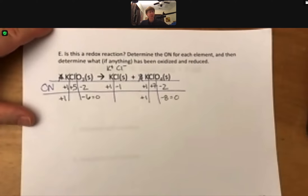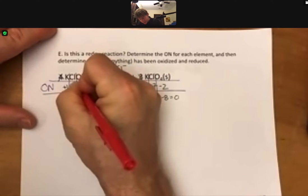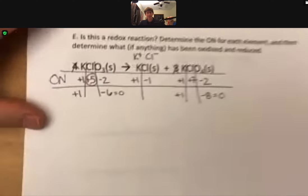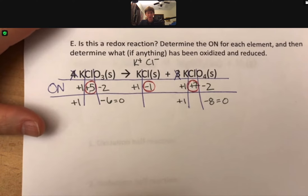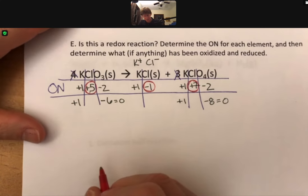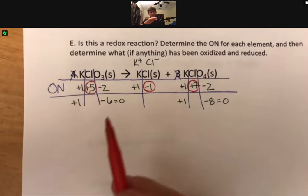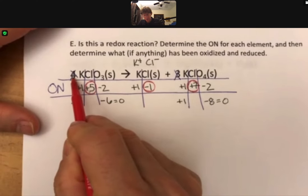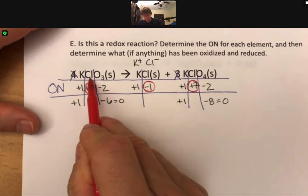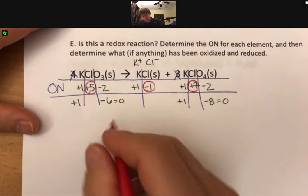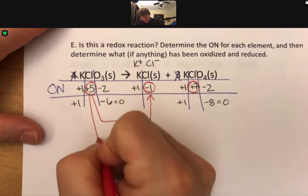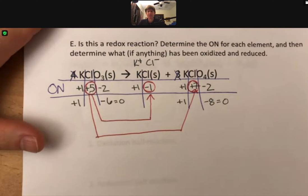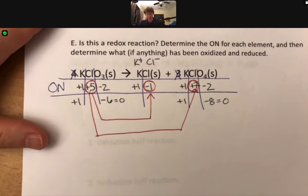Only one chlorine, so it has to bear the full of that plus seven charge there. Now let's see what things, if anything, has been oxidized. I see a chlorine at plus five, a chlorine at minus one, and a chlorine at plus seven on the product side. What's interesting is that really all four of these, where the four comes in is there's four chlorines here, one chlorine, and three chlorines here. These four chlorines, some have gone from plus five to minus one, and some have gone from plus five to plus seven.